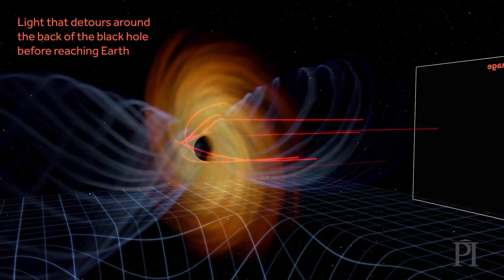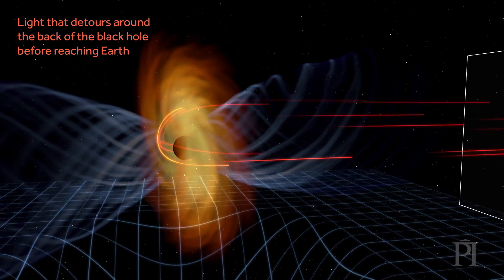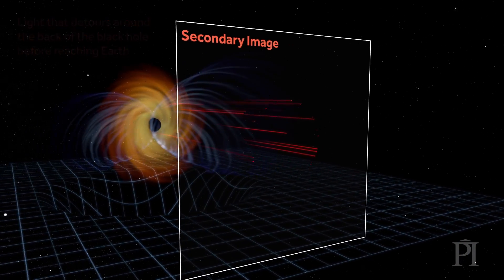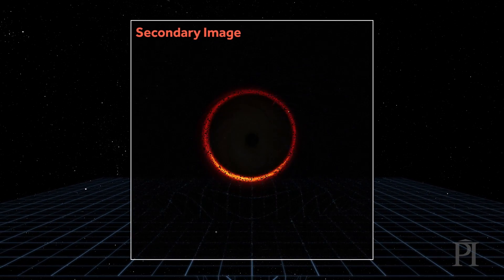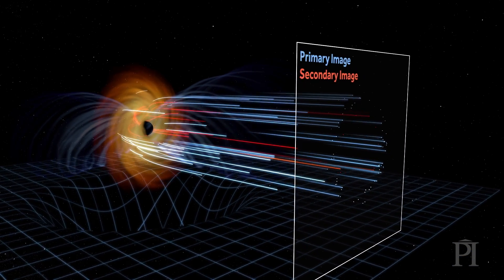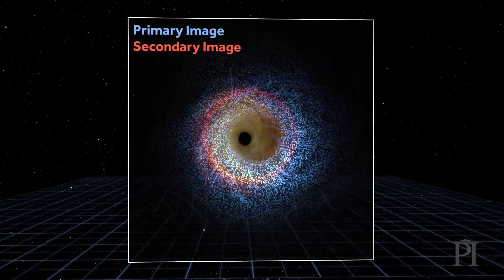The photon ring is composed of those bits of light that detour around the back of the black hole before coming to us, that make a full orbit before reaching Earth, and as such are telling us, in some sense, about what's behind the black hole, not merely what's around it.